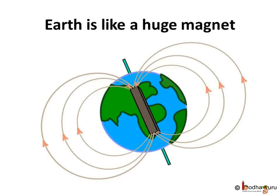Another interesting fact about the Earth is that the Earth too behaves like a huge magnet! Since all the magnets have two poles, you would wonder which are its two magnetic poles. Well, the two poles of the Earth — the North Pole and the South Pole, which are covered with ice — are in fact the two poles of the magnetic Earth.